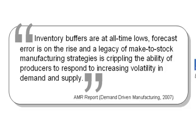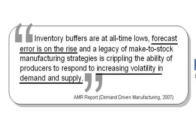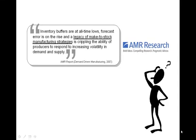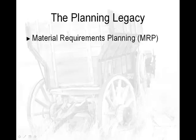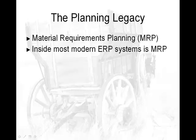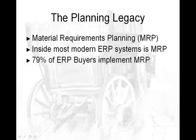This statement tells us the world is a more volatile place. But most importantly, it tells us that there are legacy strategies in the face of that volatility that are crippling. What is this legacy? Throughout the world, the primary inventory materials planning tool is something called Material Requirements Planning, or MRP. Inside most modern ERP systems resides an MRP module.